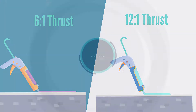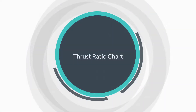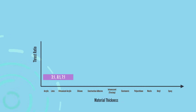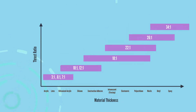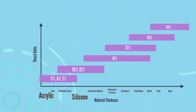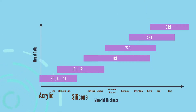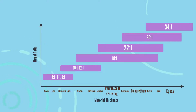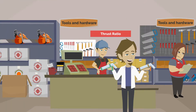Here we have a thrust ratio chart. As you can see, thrust ratios can range from 3-to-1 all the way to 34-to-1. Materials like acrylic and silicone require a lower thrust ratio because they are thinner materials. On the other hand, materials like fire stop, polyurethane, and epoxy need a higher thrust ratio because they tend to be thicker.